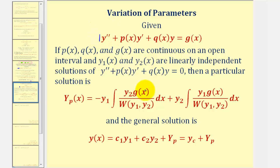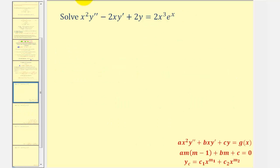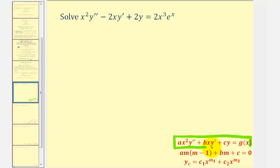Our first step is to recognize that the given differential equation does fit this form here, and therefore we do have a second-order, non-homogeneous Cauchy-Euler equation. Now for the next step, we'll find the complementary function of the general solution by setting up this auxiliary equation.